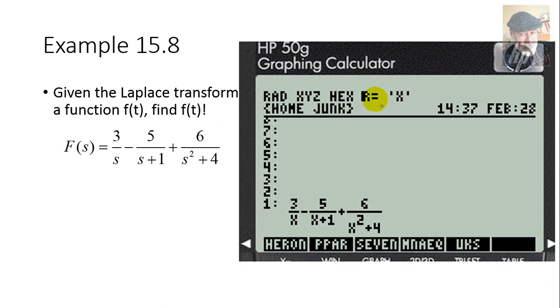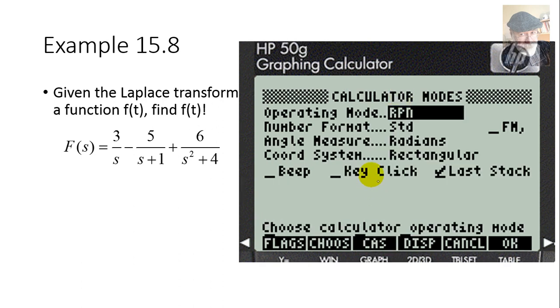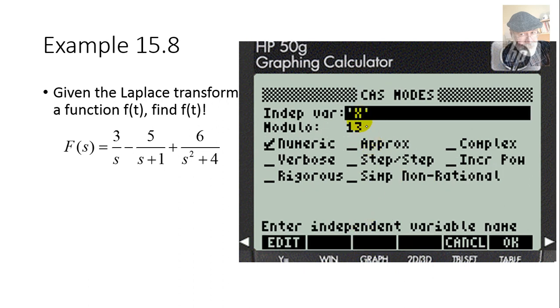As usual, make sure that the independent variable showing up here is X. If it isn't, I go to the mode menu. While I'm on it, I change the number format to standard if it isn't standard. And then select CAS. And in CAS, I make sure that X, the independent variable, is there. If it is not X, click on F1 to edit it and make it S.